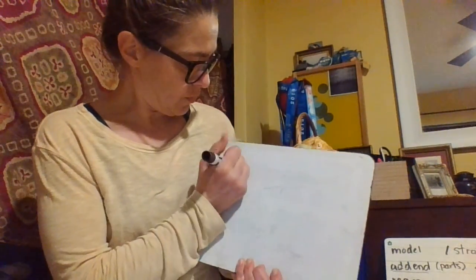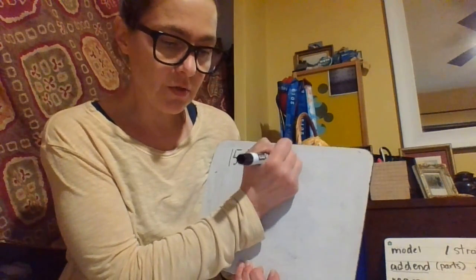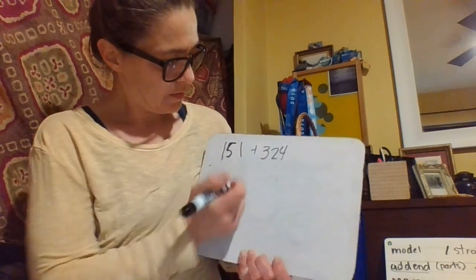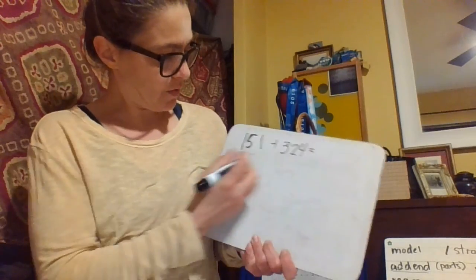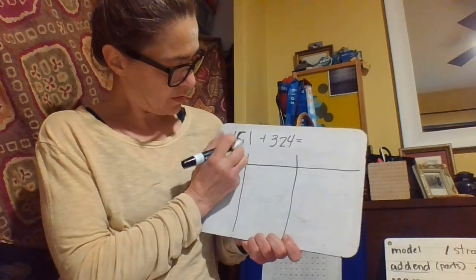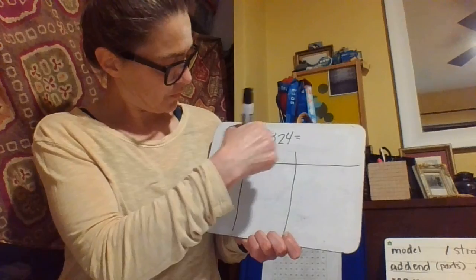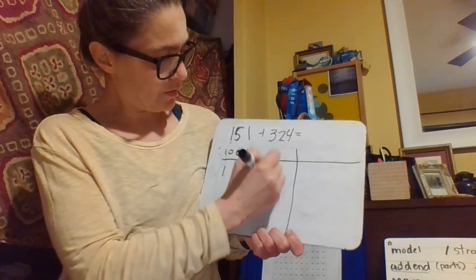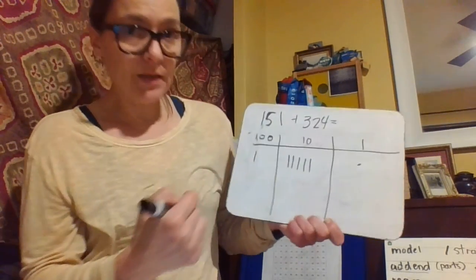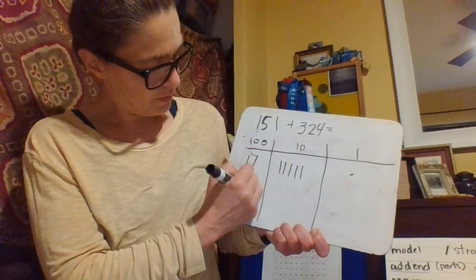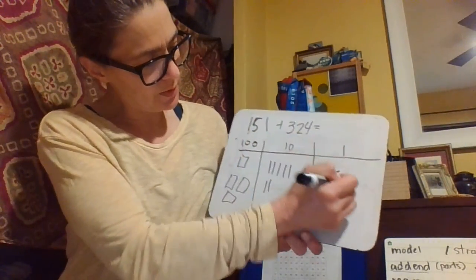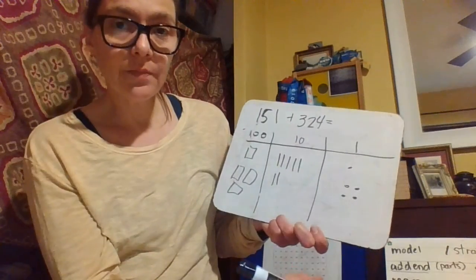Let's go ahead and do one more. It says do 151 plus 324. So I'm not going to take the time to erase that. I'm just going to go ahead and draw it on here. So we have the hundreds. I have 100. And I have 50. 10, 20, 30, 40, 50. And one one. Then I have adding the next addend. I have 300. 1, 2, 3. And then 20, 10, 20. And then four ones.